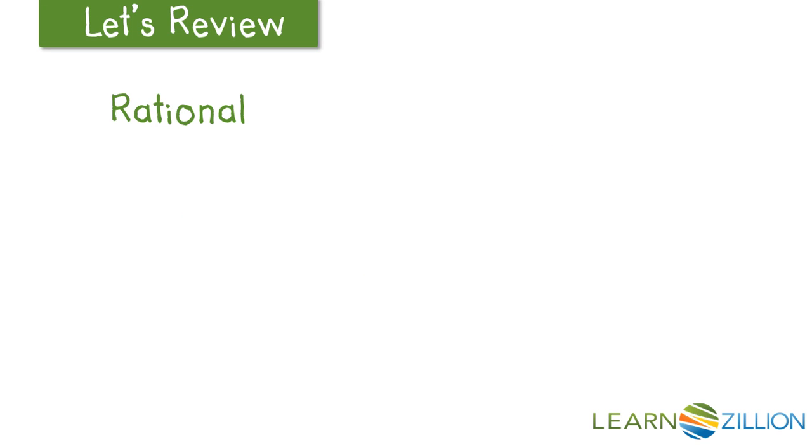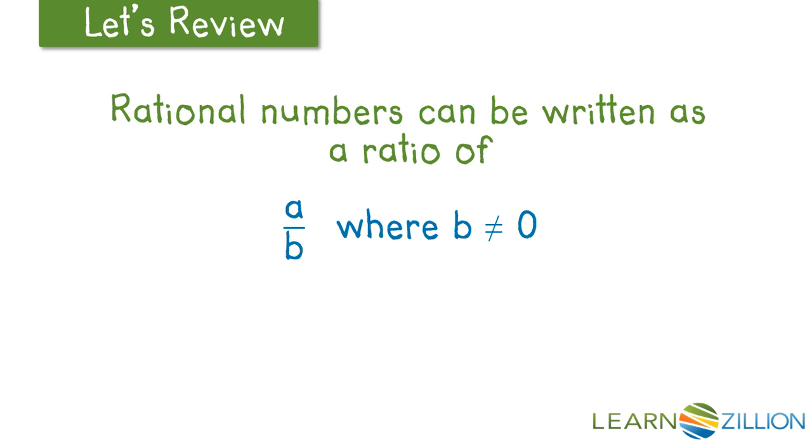Let's review. Rational numbers can be written as a ratio of a over b, where b cannot be zero.